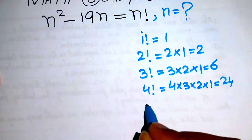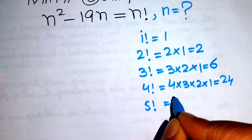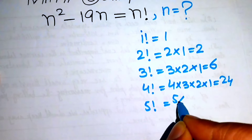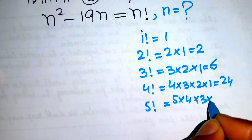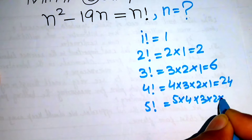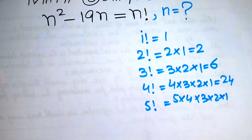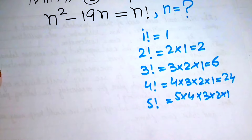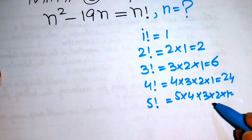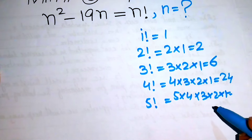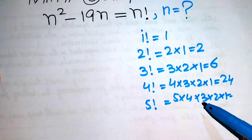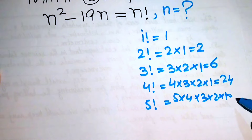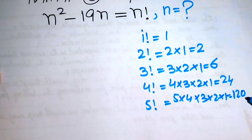If we have 5 factorial, we write it as 5 times 4 times 3 times 2 times 1. When we multiply all these numbers: 5 times 4 is 20, 20 times 3 is 60, and 60 times 2 is 120.